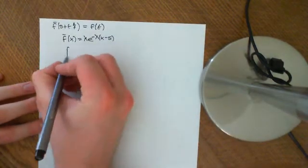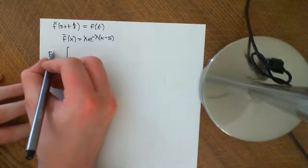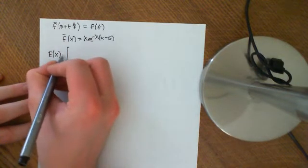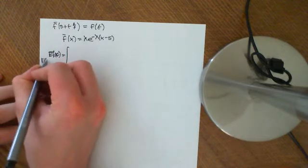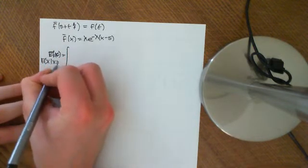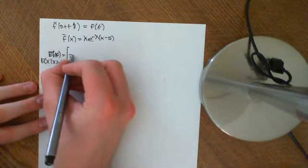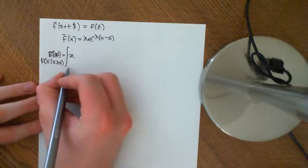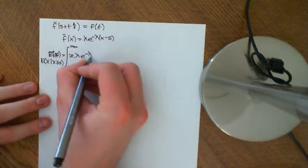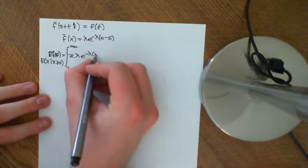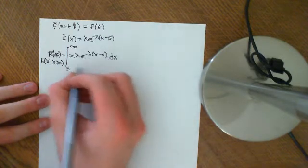Now if we want to work out the expected value — the conditioned expected value — the expected value of X given that X is greater than or equal to s, then it's going to be equal to the integral from s to plus infinity of x times lambda e to the negative lambda of x minus s, our conditioned probability density function, dx.